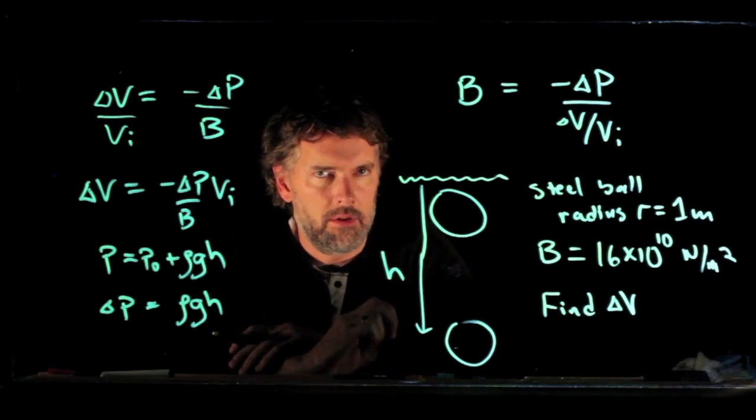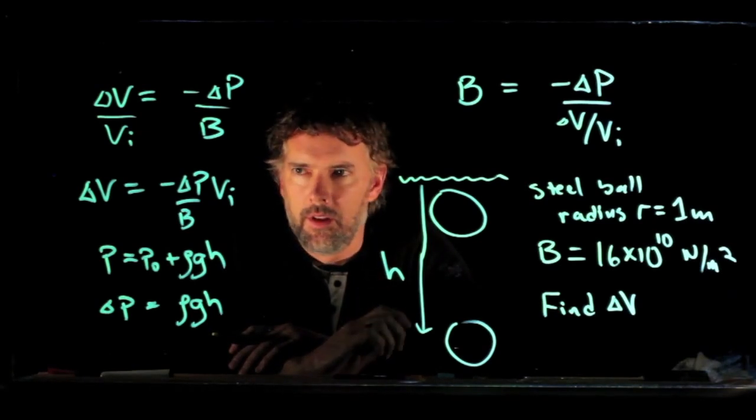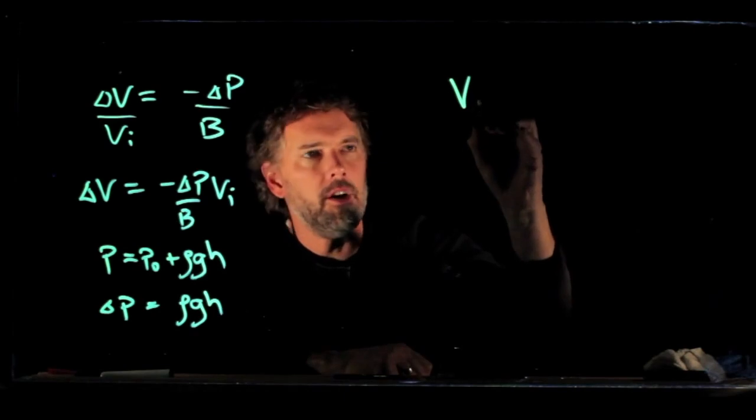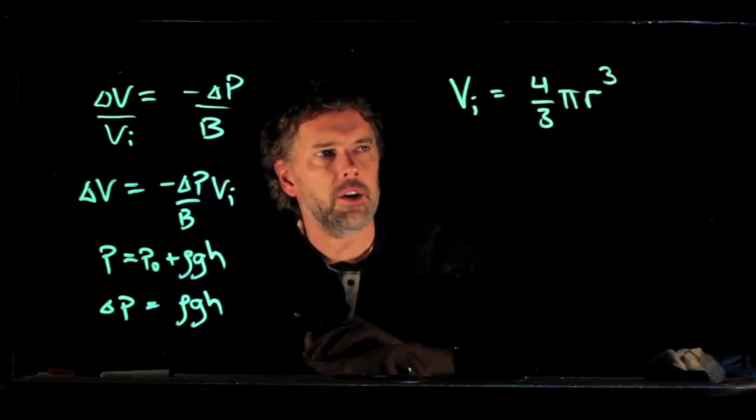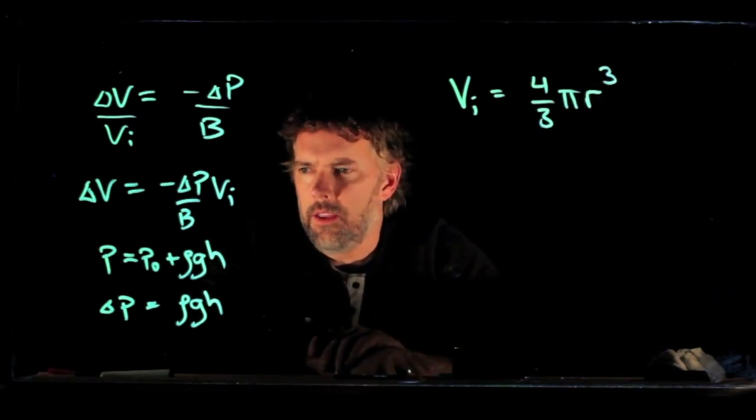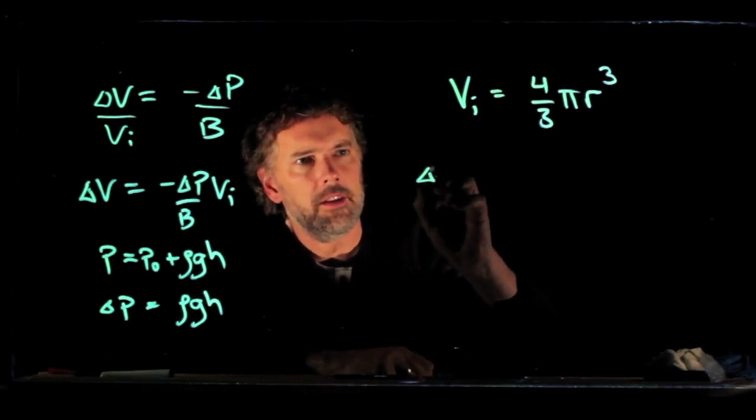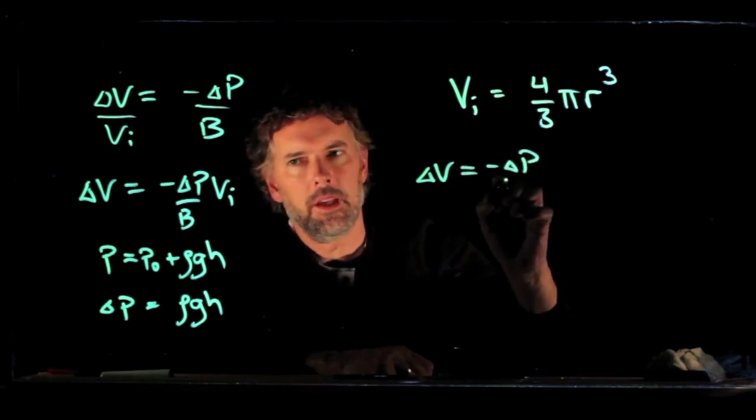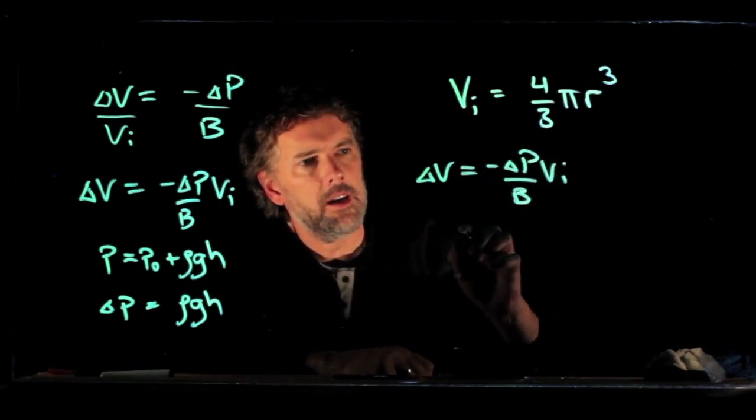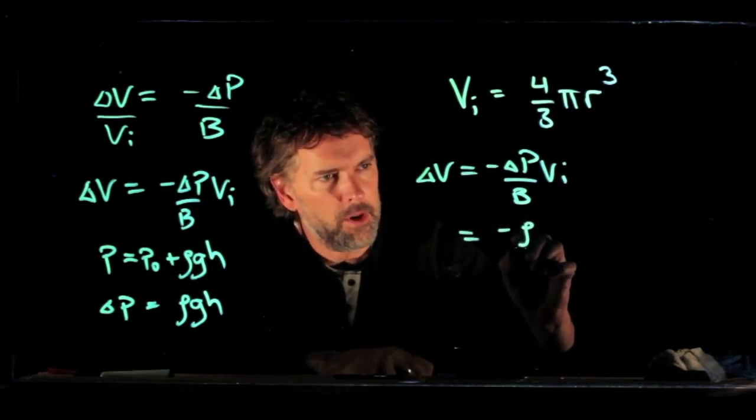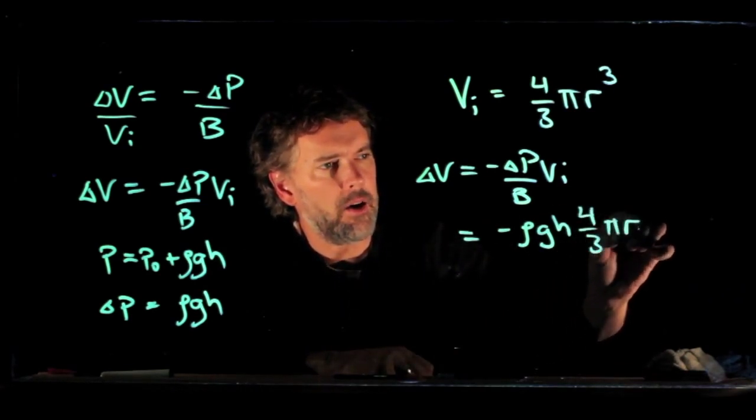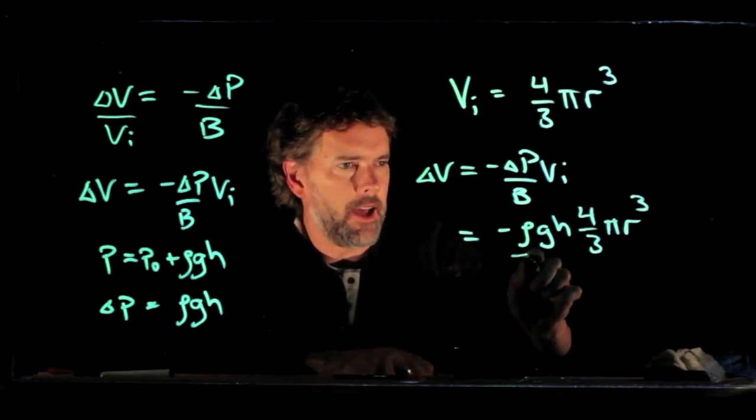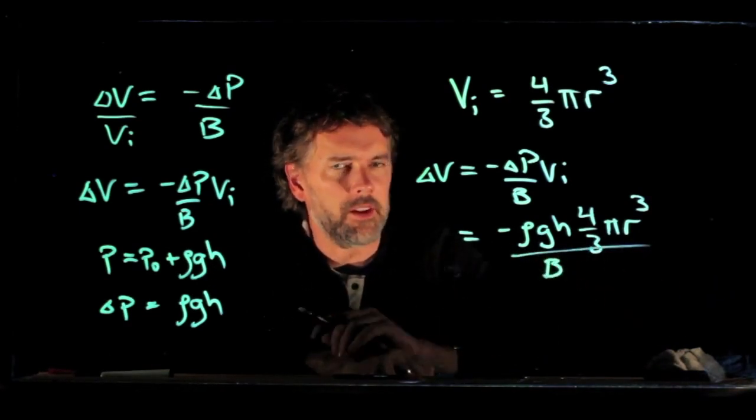What about V sub i? V sub i is the volume of the sphere, so we need to take that into account. So V sub i is 4/3 πr³, and I think that's everything we need. So now we can calculate ΔV. ΔV is -ΔP/B times Vi, which is -ρgh times 4/3 πr³, and we're going to divide that by B, which we said was 16 times 10 to the 10.